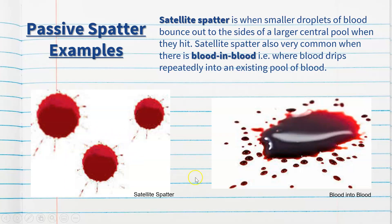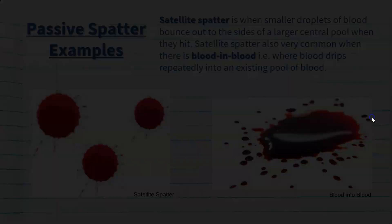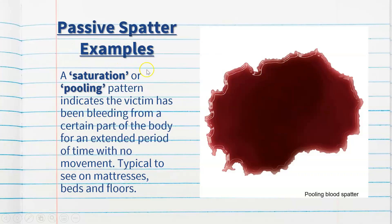Blood into blood occurs where blood drips repeatedly into an existing pool in the same spot, creating a pool after an extended period of time. A saturation or pooling pattern indicates the victim has been bleeding for an extended period with no movement. Because passive spatter is caused by gravity, it means the person has not been moving, causing blood to pool from a particular wound. This is very typical to see on mattresses, beds, and floors, as these are unfortunately common locations where crimes and murders are committed.